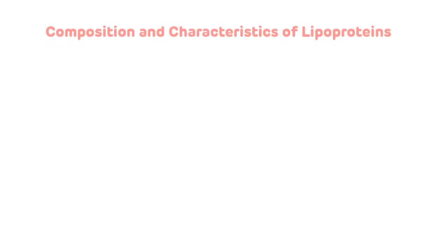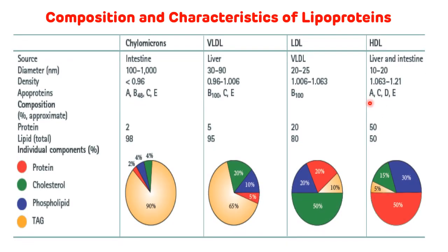Now we will see composition and characteristics of lipoproteins. Chylomicron is bigger in size and HDL is smaller in size. Chylomicrons are synthesized in the intestine; VLDL is synthesized in the liver; LDL is synthesized from VLDL; and HDL is synthesized in the liver as well as in the intestine. Chylomicrons have the least density while HDL has the highest density. Apolipoproteins present in chylomicrons are ApoA, ApoB48, ApoC, and ApoE.